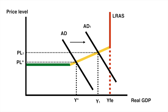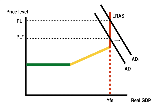This could be the result of an increase in consumption, investment, government spending, or net exports. If the economy is operating at the full employment level of output, any increase in aggregate demand will result in a higher price level. Any increase in the components of aggregate demand will cause this.